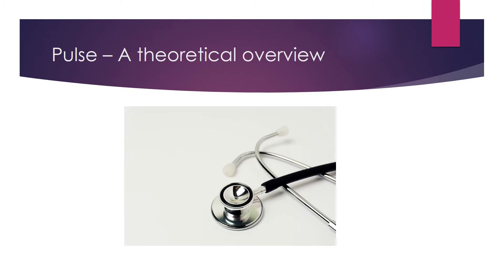When measuring respiration, respiratory characteristics such as rate, rhythm, and depth are taken into account. Rate is the number of respirations per minute. The normal range for adults is 12 to 20 per minute.